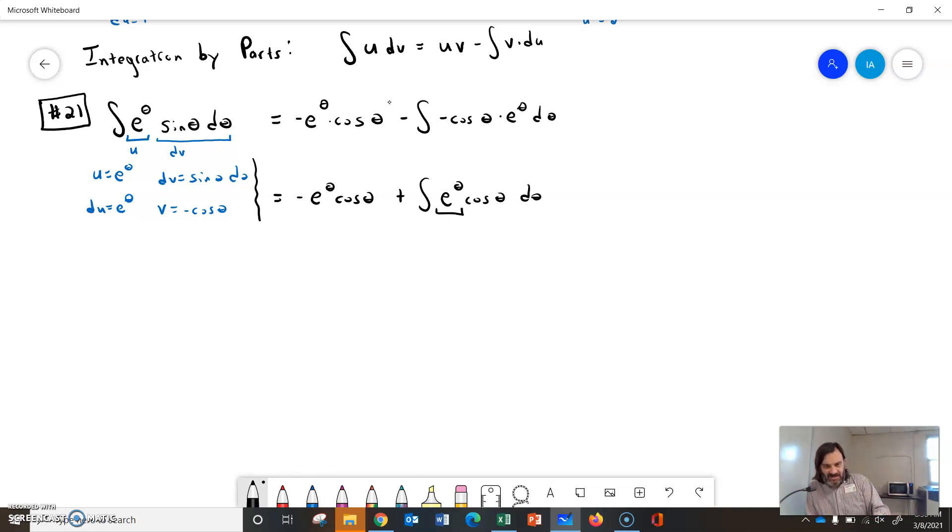So I'm going to let e to the theta, we're supposed to change colors here, be u. And cosine theta d theta be dv. So let's see here. We will have, if we do that, u is e to the theta. So du is still e to the theta. dv is cosine theta d theta. So then integrate that. The v will be sine of theta d theta.